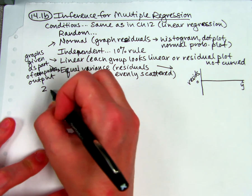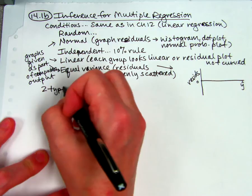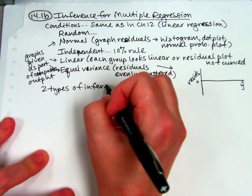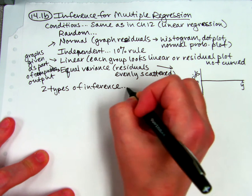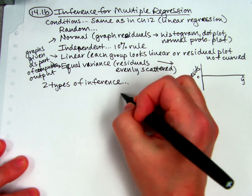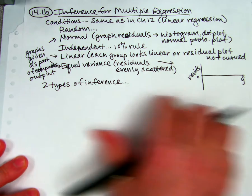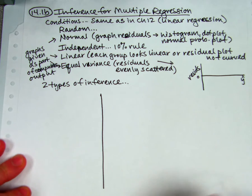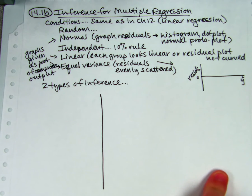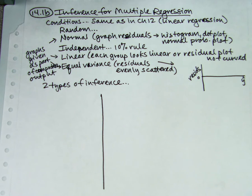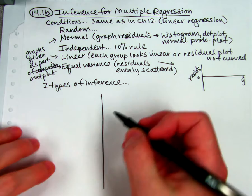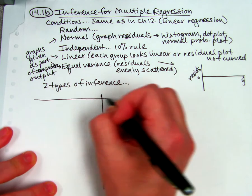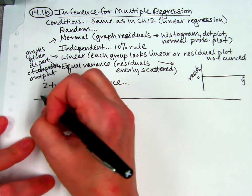So they're going to give you on every problem in your homework and on the quiz, they're going to give you computer output. And that's fine. We're just going to learn how to interpret it. So there are two types of inference, and we are doing them both in one day because they're really not very hard. Two types of inference that can be done with multiple regression.